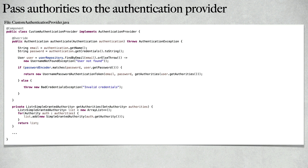The fourth and last step is to pass the authorities to the custom authentication provider. Inside the custom authentication provider we create a private method called getAuthorities, which takes a Set of authorities. Inside this method we create a List of SimpleGrantedAuthority, loop over the user's authorities, add each to the list, and return it. This list is then passed to the UsernamePasswordAuthenticationToken.